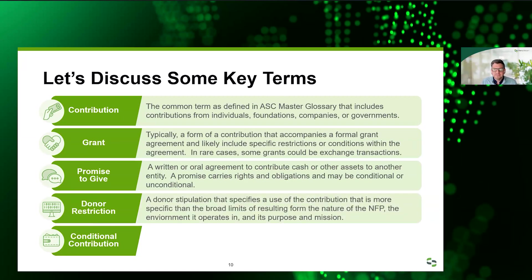A donor restriction is basically a donor stipulation that specifies the use of a contribution that's more specific than the broad limits that might result from the nature of the organization itself — the environment in which it operates, or its purpose or mission. The donor wants it to be a little bit more specific than just your general purpose.